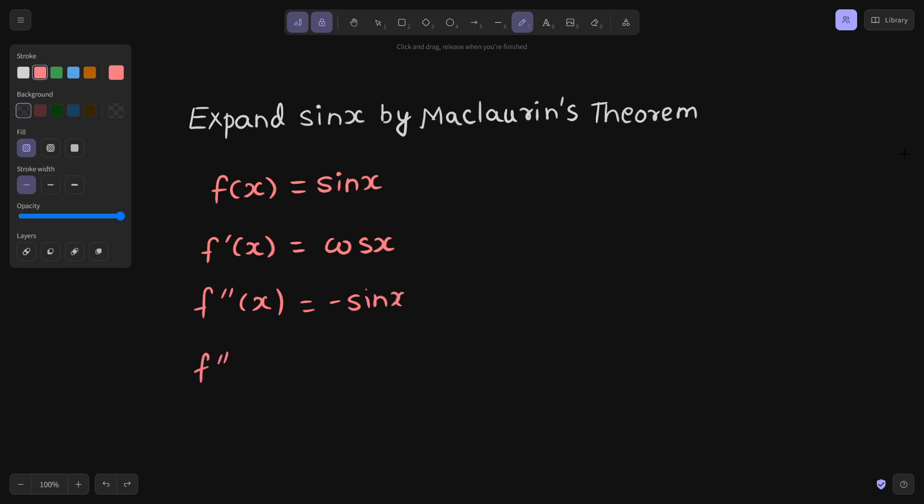Third derivative: sine x derivative is cos x and one minus sign is already there. Fourth derivative: cos x derivative is negative sine x, one minus sign is already there, so plus sine x. So we have calculated at least 4 derivatives.